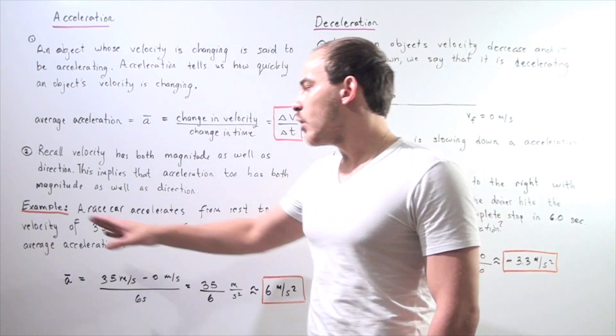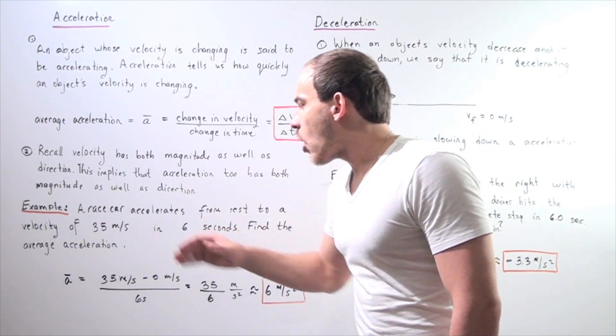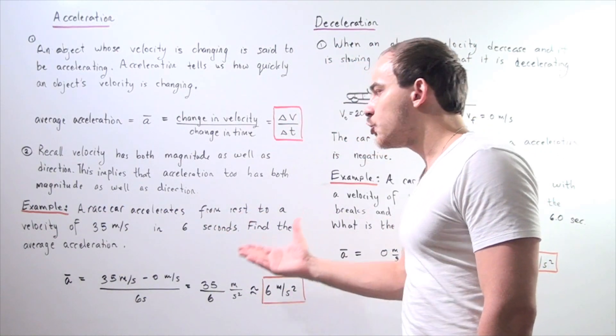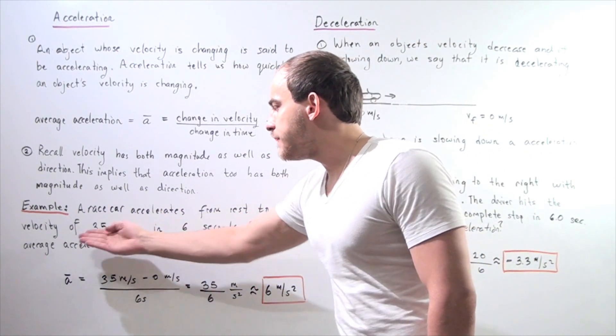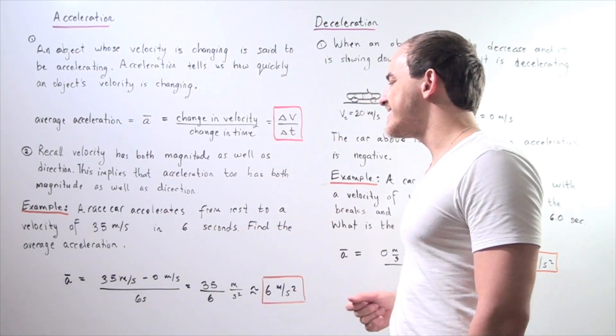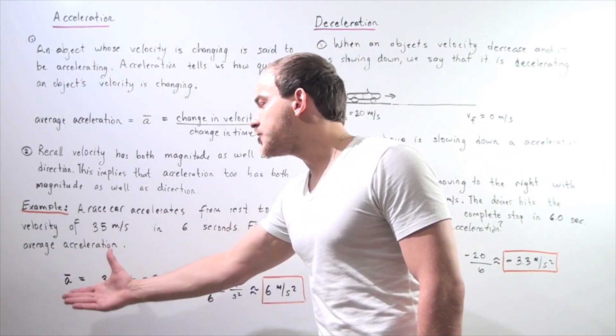Let's look at the following example. A race car accelerates from rest to a velocity of 35 meters per second in 6 seconds. Find the average acceleration.